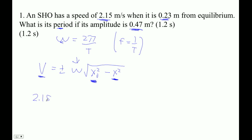We've got 2.15 is equal to omega times the square root of 0.47 squared minus 0.23 squared. So now we can solve for this. So I'm going to go 2.15 divided by the square root of 0.47 squared minus 0.23 squared.